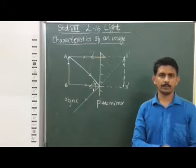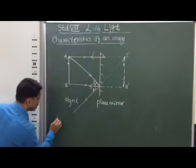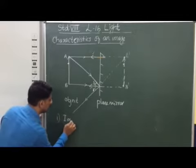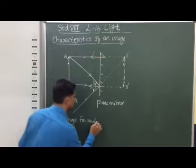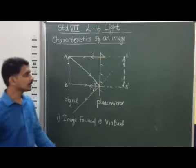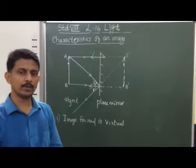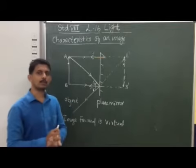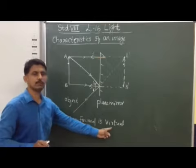The image is formed inside the mirror, so we can say that the nature of the image is virtual. The first property is that the image formed is considered as a virtual image. Virtual image means these types of images cannot be obtained on a screen, since the image forms inside the mirror.